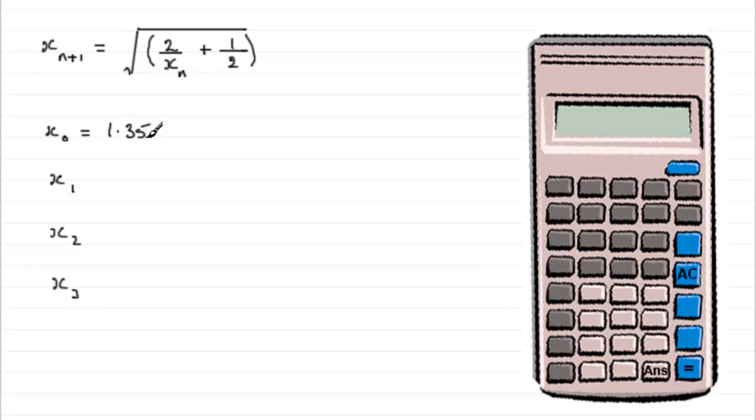And now, all you've got to do is just type in your formula. So if you enter into your calculator, the square root, and then we'll need some brackets, and you'll need to press the fraction button, and then you'll have 2 divided by, but at this point here, instead of xn, you just press the answer key, and ans will come up. And then plus, and then you've got a fraction again, a half, and close that bracket.